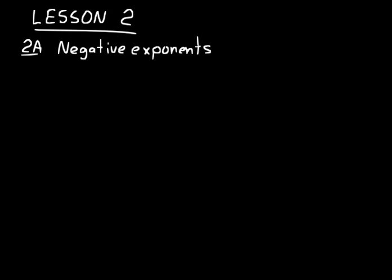Lesson 2 has several parts, most of them are review. The first part is on negative exponents. Let's start by understanding 2 to the third power. That just means 2 times 2 times 2 — that's the definition. When we have that exponent, it means we multiply 2 out 3 times in a row, and that equals 8.